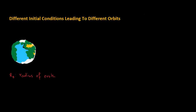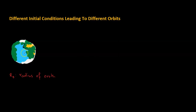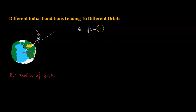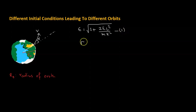Now that we have an expression for escape velocity, we'll consider different initial conditions to see how they lead to different orbits — such as parabolic, hyperbolic, or circular orbits. We begin by considering the Earth's surface, where R₀ represents the Earth's radius. An object is shot upwards with velocity V making an angle α with the radial direction. We write the eccentricity as ε = √(1 + 2EL²/mK²) — let this be equation number 1.